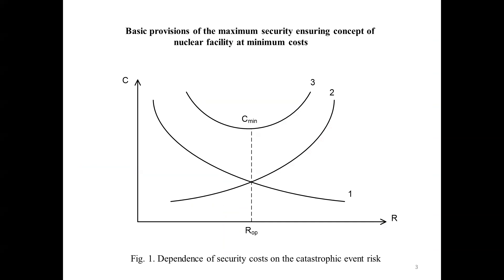As shown in Figure 1, the abscissa axis shows the risk value R, which determines the probability of a catastrophic event. Accordingly, it is measured as a fractional number or as a percentage, and cannot exceed a maximum value equal to 1 or 100%. The value indicator C, calculated in monetary units or conventional units — usually in thousands or millions of value units — is plotted along the ordinate axis. The first curve is the cost of preventing a hypothetical catastrophic event. The higher the cost, the lower the risk of catastrophic event, and vice versa.